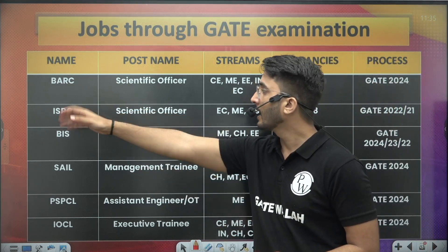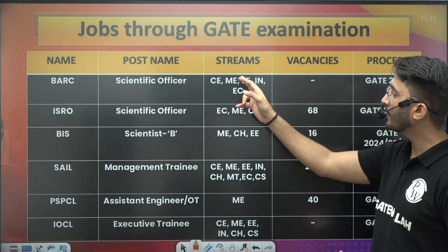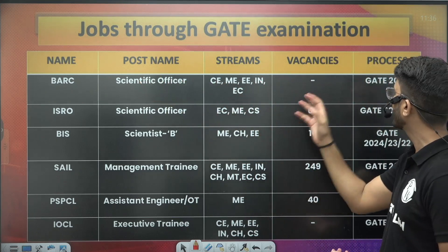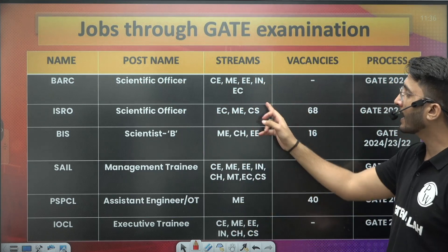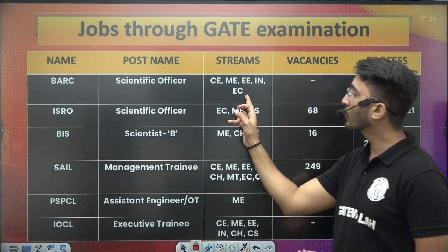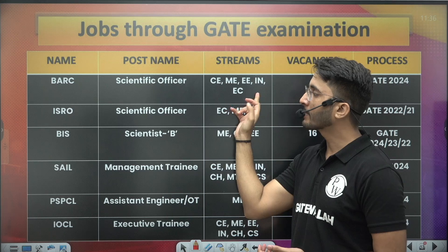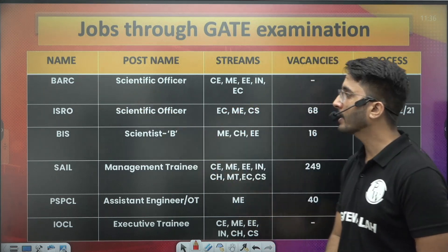You can check BRC — Scientific position — with Civil, Mechanical, Electrical, IN, and EC branch vacancies available through GATE 2024. For example, if your branch is EC, you can see that you have a portion of vacancies at BRC.